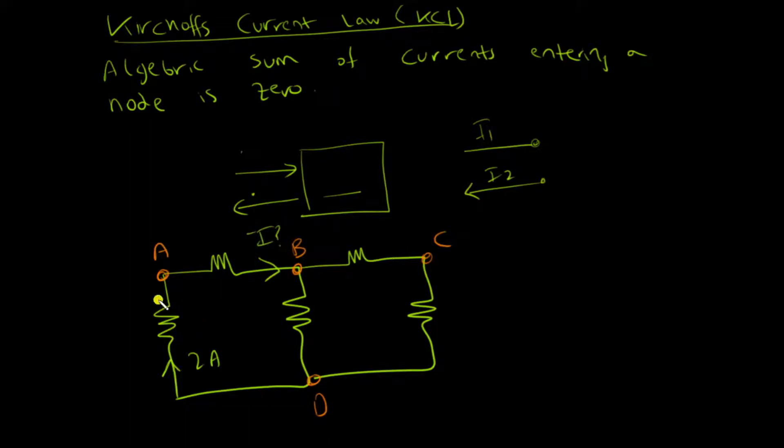I can see that there are two amps entering node A. So how much is leaving node A? Because two amps is entering the node, two amps must be leaving the node too, since this is the only current leaving the node.